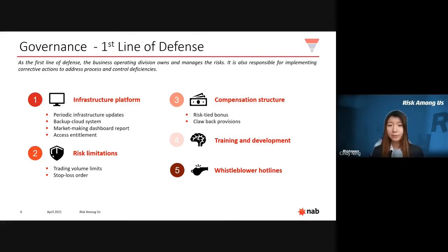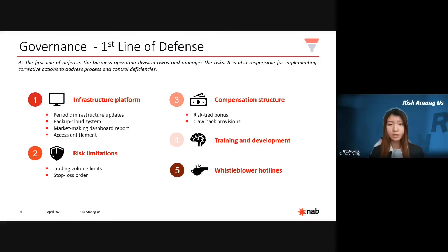Secondly, the bank should have risk limitations in place, such as imposing quantity limits to put upper bounds on transaction sizes to prevent excessive risk-taking, and use stop-loss orders to prevent transaction values from falling outside their risk appetite. Thirdly, the compensation structure should be modified to prevent principal-agency problems — for instance, tying bonus payments to the amount of risk each trader takes, and using clawback provisions that pay bonuses over the long term to discourage traders from taking risky positions that would pose long-term issues.